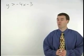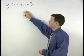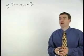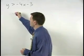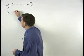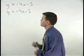To graph the inequality y is greater than negative 4x minus 3, we start by graphing what is called the boundary line, and in this case that's y equals negative 4x minus 3.